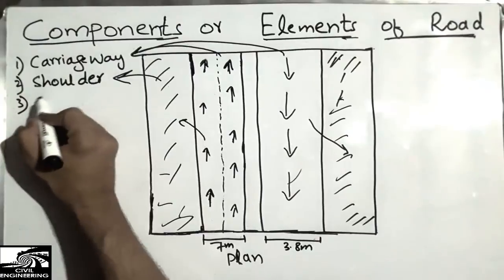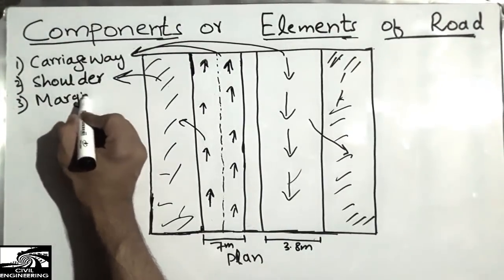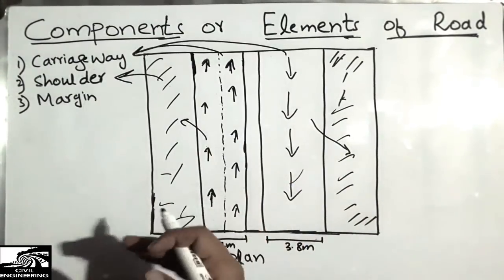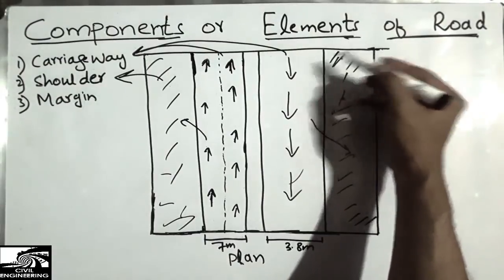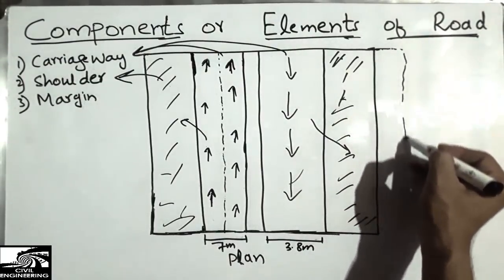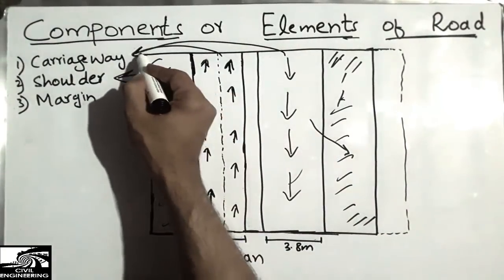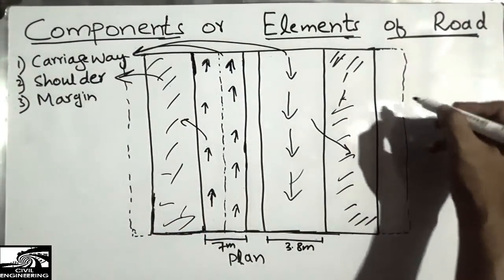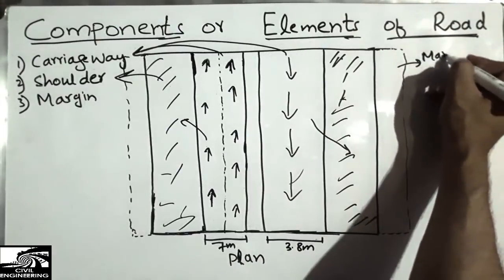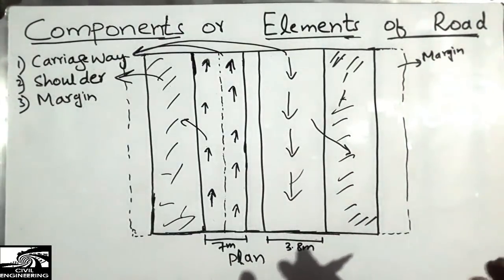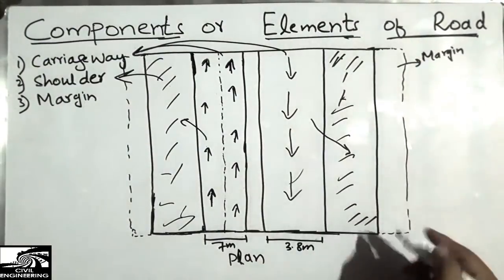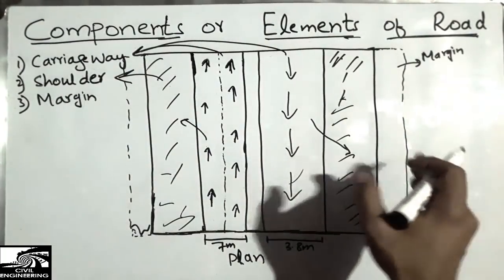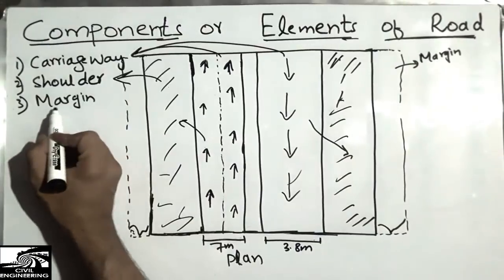The third component is the margin. The margin is the part of the road provided after the shoulder. A small portion at the very last part of the road is called the margin. It is usually provided for drainage of water — water passes through this portion. It is the last part of the road, and we call it the margin.